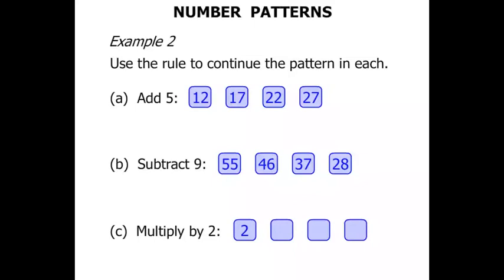Let's multiply by 2 for this one. So we're starting with 2 and multiply by 2. In other words, double it. So 2 times 2 is 4. 4 times 2 is 8. 8 times 2 is 16.